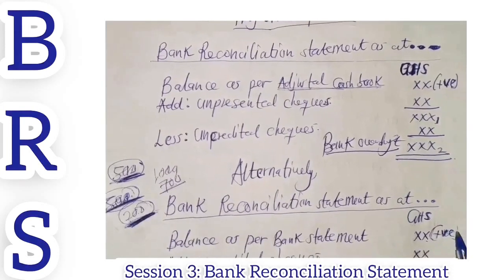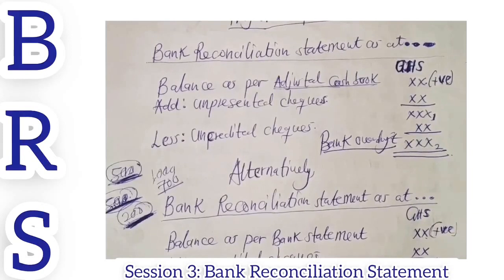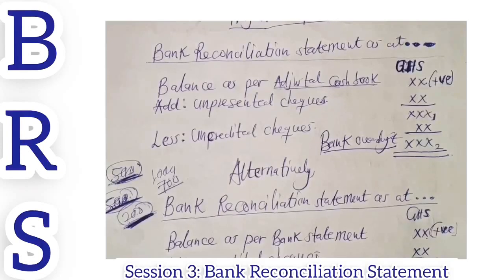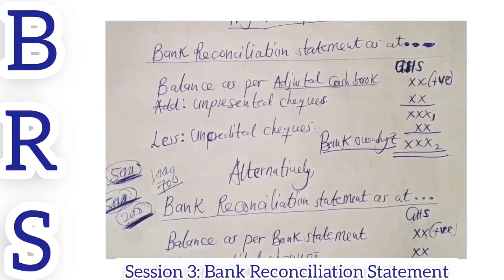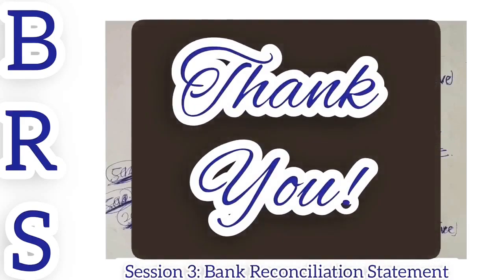So anytime there is an overdraft, just put the balance in brackets and apply the format we use to prepare the bank reconciliation statement. We will work through questions in the next session so you fully understand how the BRS is prepared under the overdraft scenario. This brings part three of our bank reconciliation statement tutorial to an end. In the next tutorial, we will look at a full question on BRS covering everything we have learned, as well as a short overview of the adjusted cash book. Thank you, and see you in the next video.